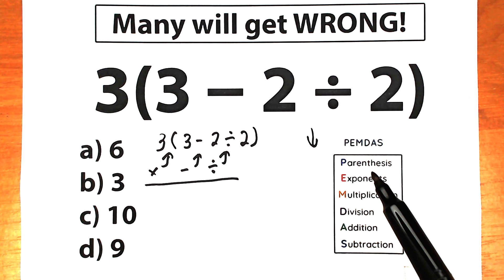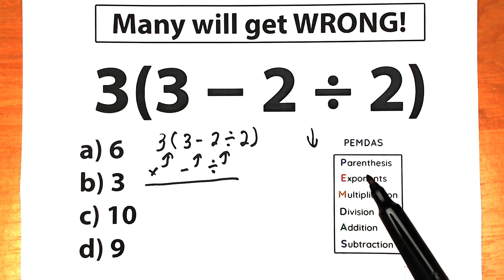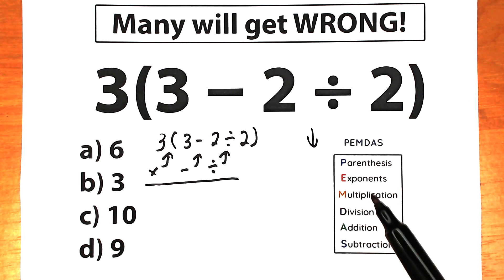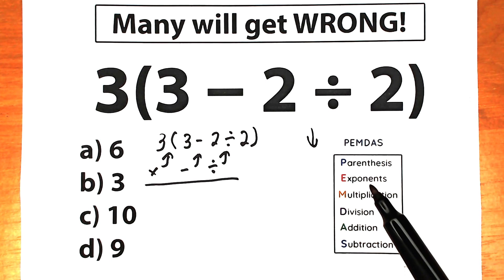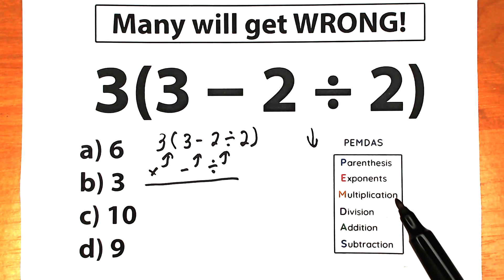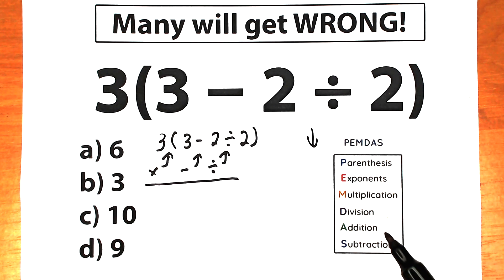Parentheses has the highest position, meaning parentheses has the highest priority. Next is exponents — like 2 squared or 2 cubed. Next is the multiplication and division group. The last step is addition and subtraction.